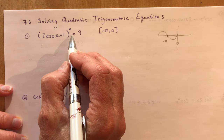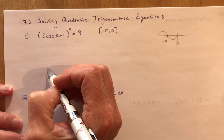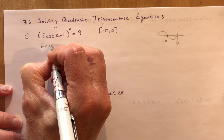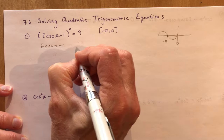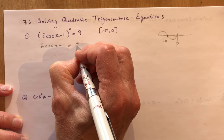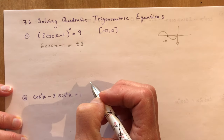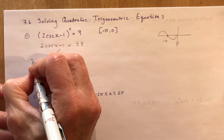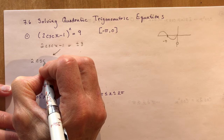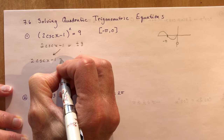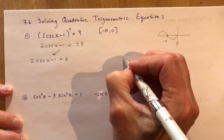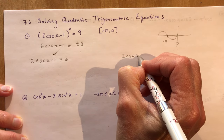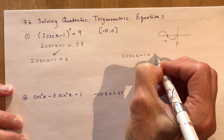When you have something squared equal to 9, you want to take the square root of both sides. Taking the square root gives plus or minus 3, so the square root of 9 leaves us with two equations to solve: 2 cosecant x minus 1 equals 3, and 2 cosecant x minus 1 equals negative 3.